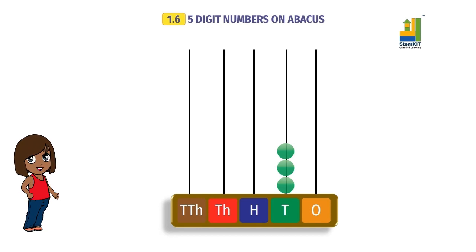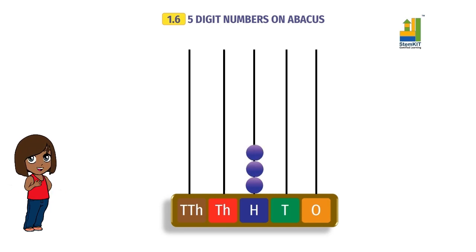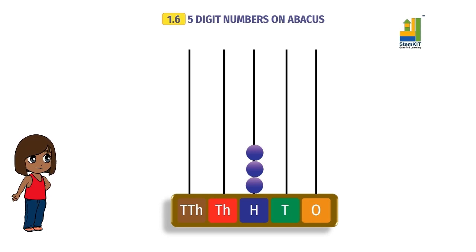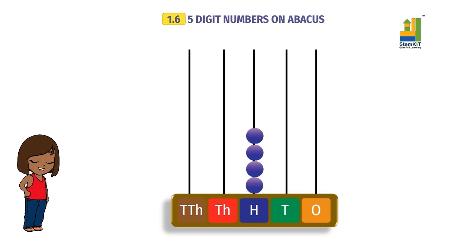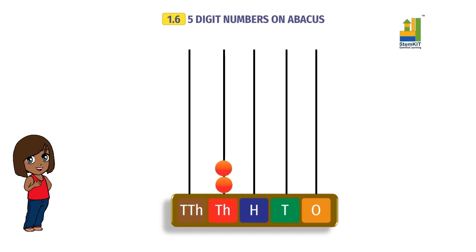Similarly, on the hundreds spike: one bead means one hundred. One more bead makes it two hundred. One more bead makes it three hundred, and one more bead makes it four hundred. On the thousands spike: one bead means one thousand, two beads means two thousand, three beads means three thousand, and so on.